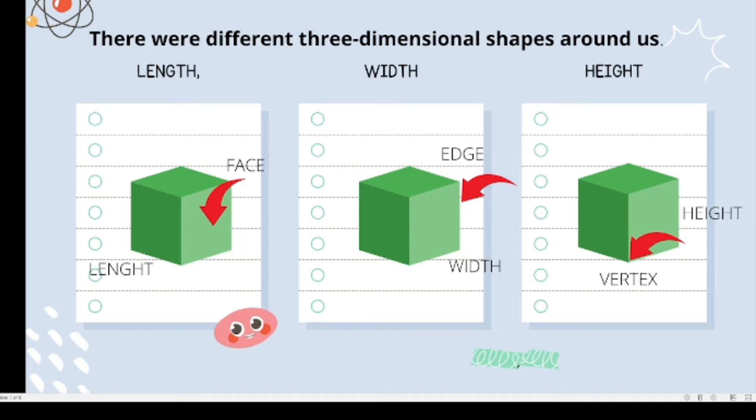They may have faces, edges, and vertices. A face is a flat surface of solid figures. An edge is formed when two faces meet. An edge is a straight line segment. A vertex is a point where edges meet.